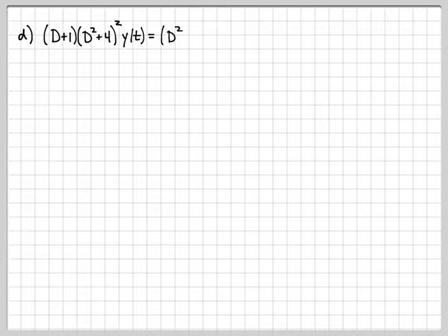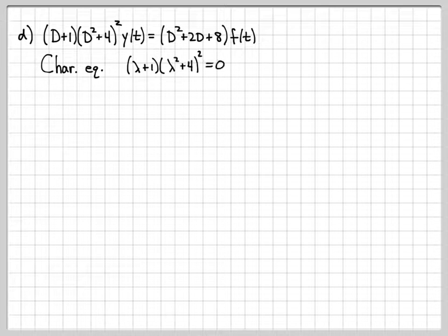And finally, one more system, part D here. Here is our system description. The characteristic equation of this system is lambda 1 times lambda squared plus 4 quantity squared. So notice the only difference between part C and part D is we've added a squared there.